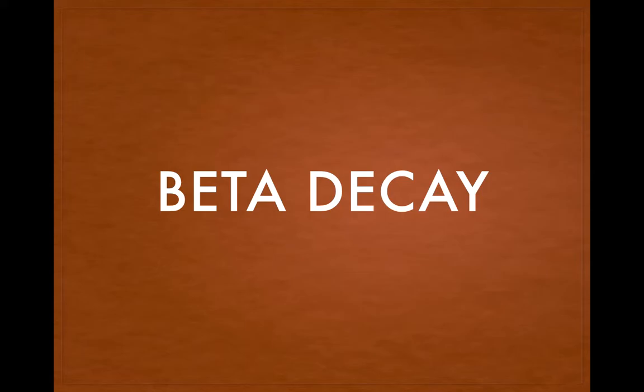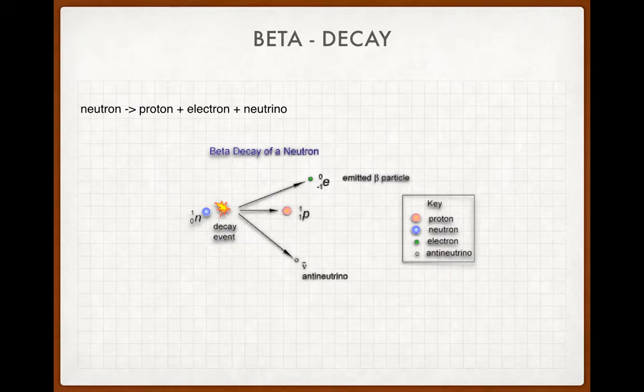Beta decay. So you should have done the research yesterday and you would have found that the neutron decays to a proton and an electron. And because energy, mass and momentum weren't conserved, Wolfgang Pauli suggested that another particle could have been emitted.